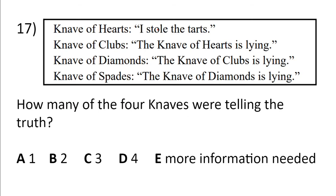The Knave of Hearts says, I stole the tarts. The Knave of Clubs says, The Knave of Hearts is lying. The Knave of Diamonds says, The Knave of Clubs is lying. The Knave of Spades says, The Knave of Diamonds is lying. How many of the four Knaves were telling the truth?